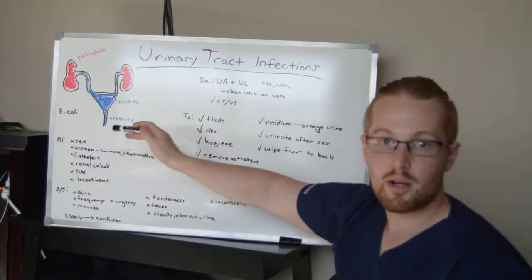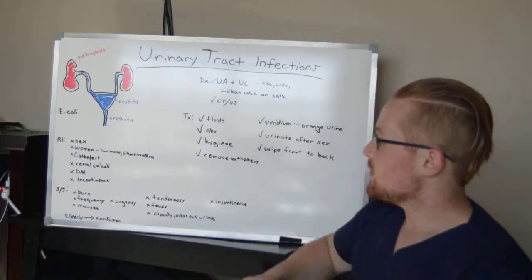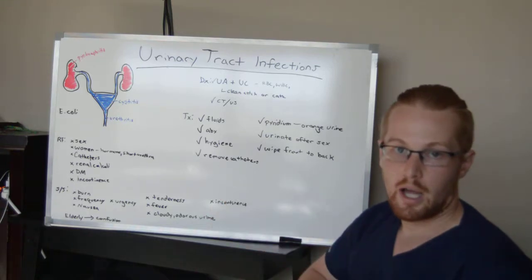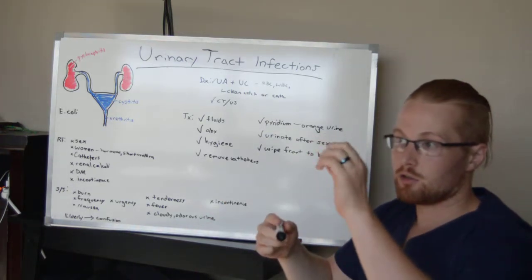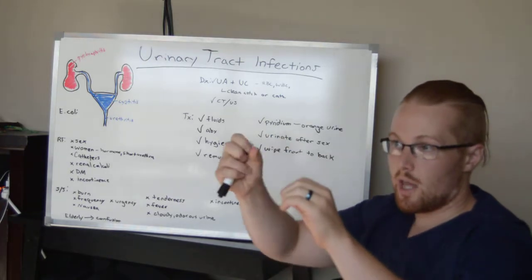Typically, the infections here are going to be something like E. coli. Why is that? E. coli is found in stool, and think of how close the anus is to the exit of the urethra, especially on women.